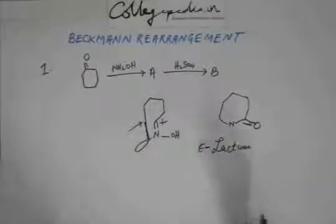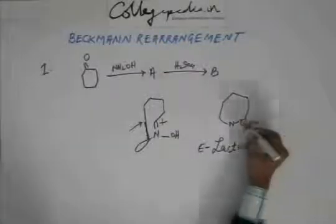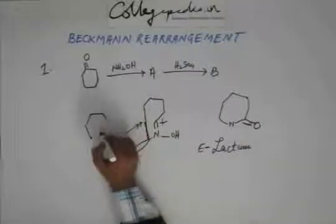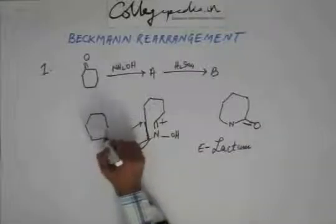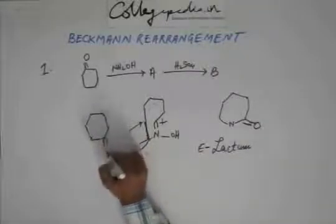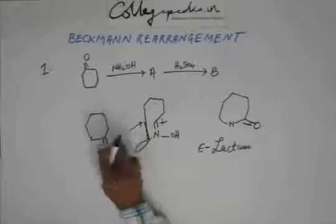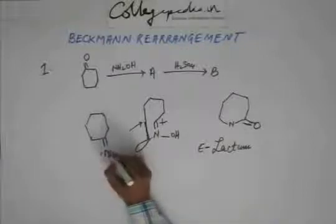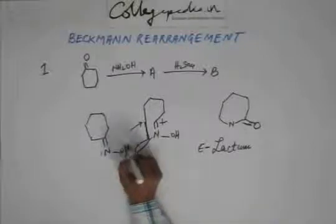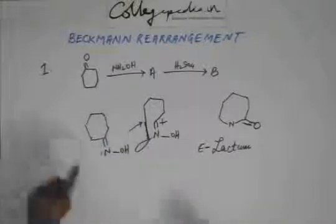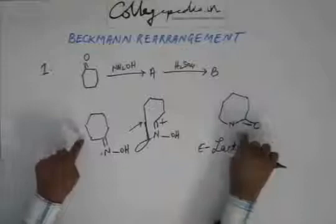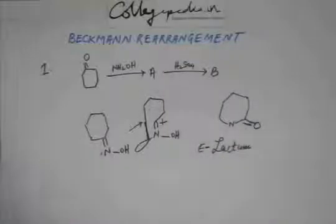So this would be B, and what you had as A was the oxime. This is A and this is B.